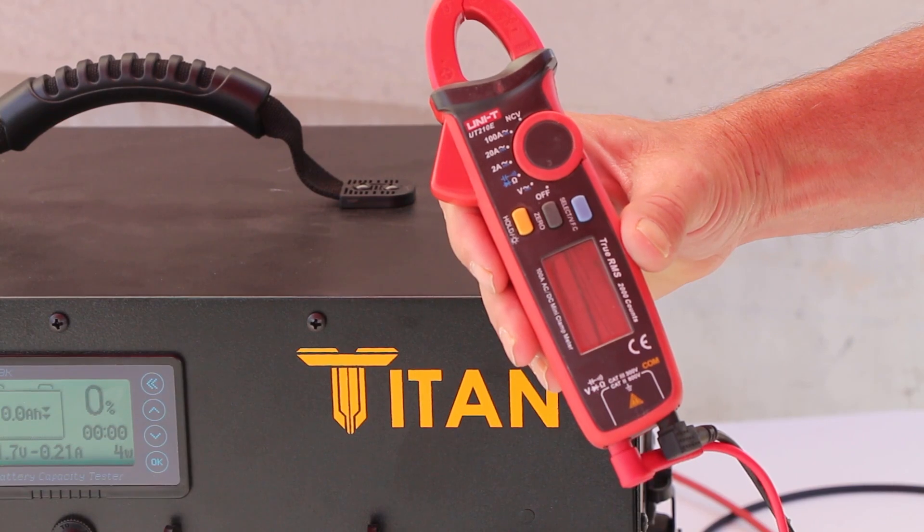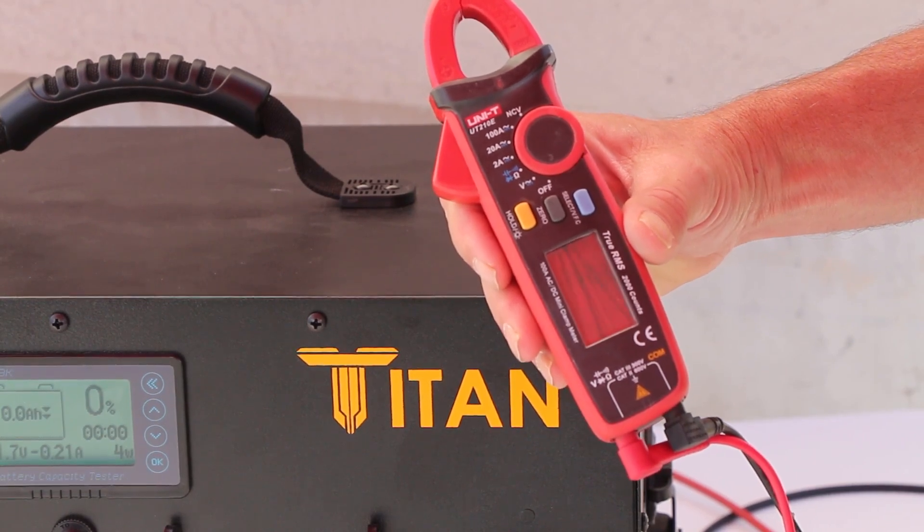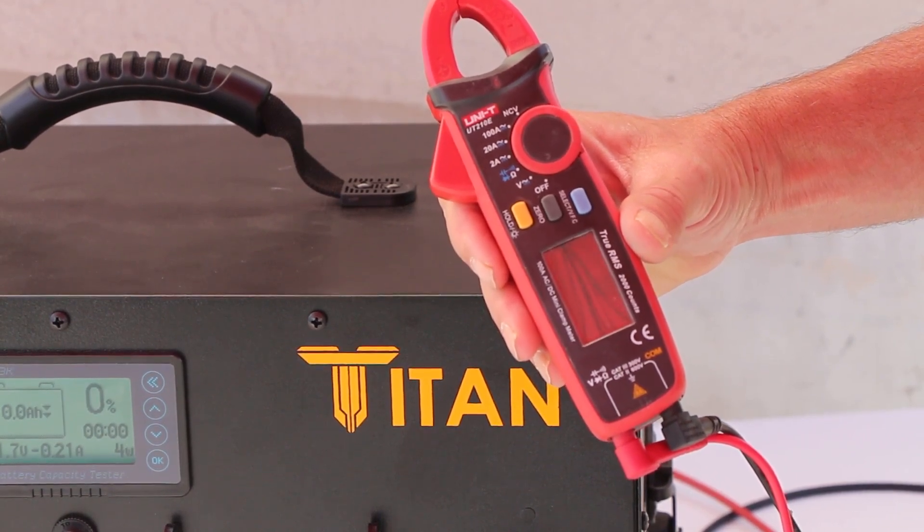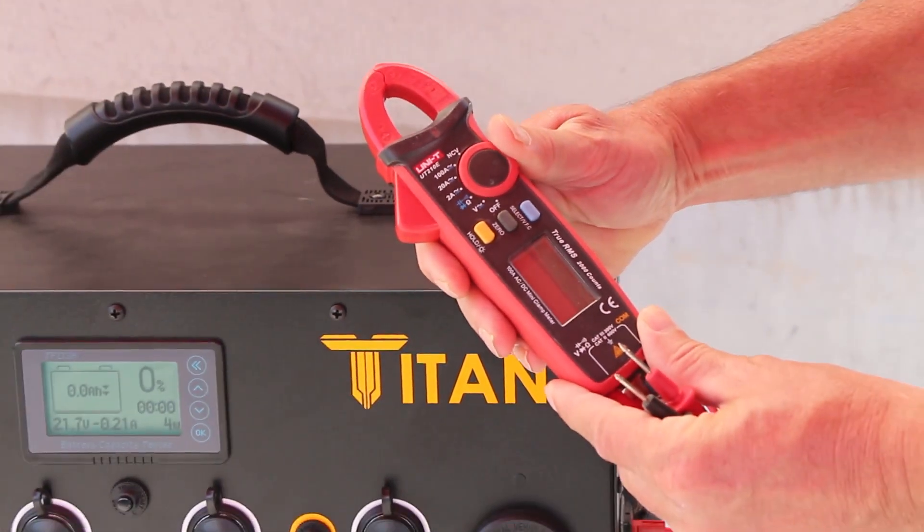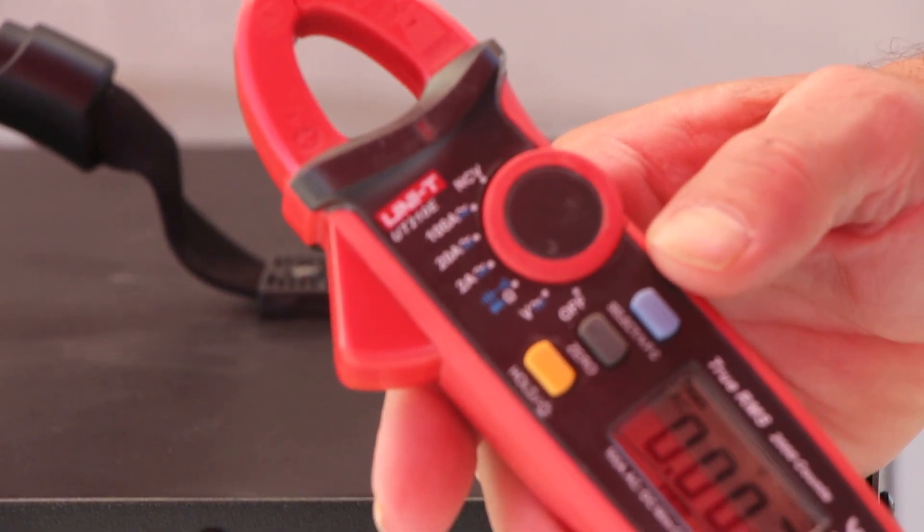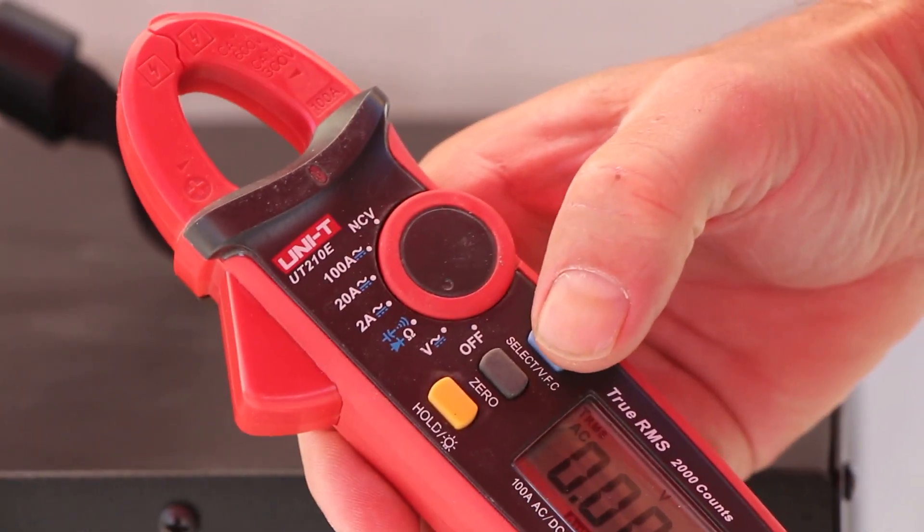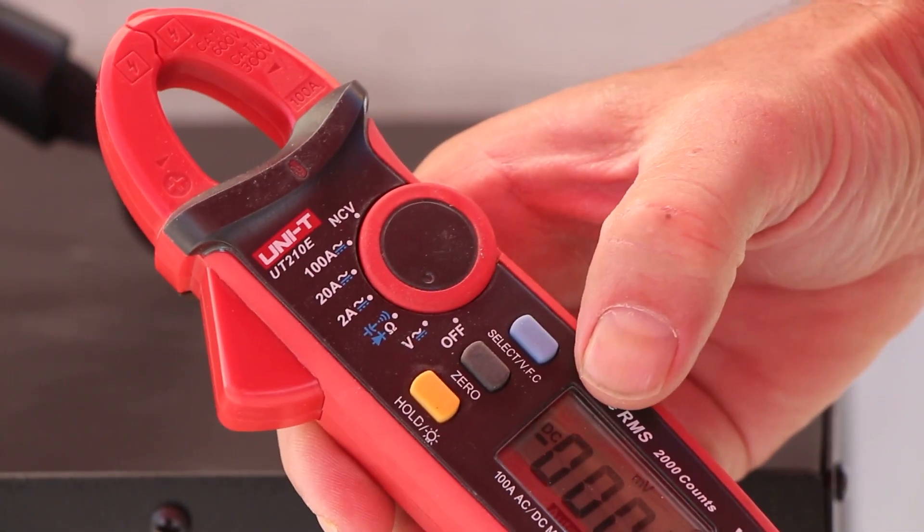The first thing we need to do is check the voltage open circuit, which is the voltage your panels are putting out. So in order to do that, you turn this knob to V which is voltage, and then you press the select button until it goes to DC.